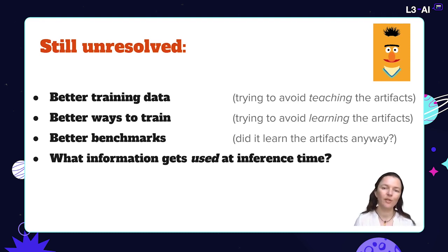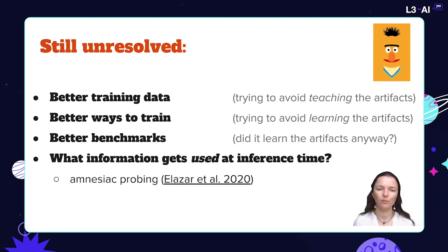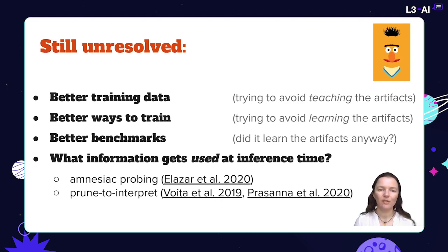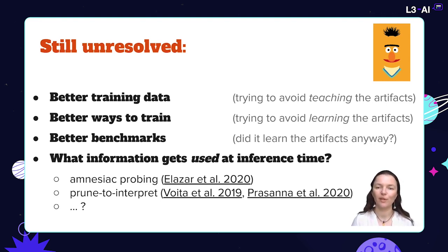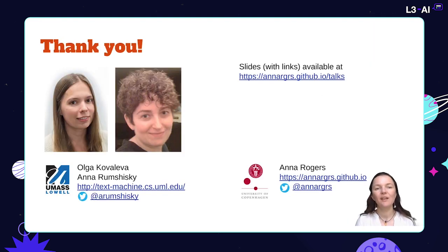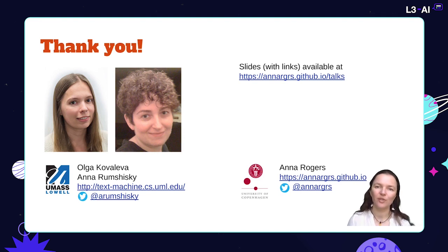Finally, all the probing studies so far have not told us what actually happens at inference time. Some directions include amnesiac probing — making the model forget something and seeing how it performs on a task — and pruning the model down to components that seem to perform a certain function. But neither of these is a silver bullet, and hopefully more convincing approaches will be found in the future. Thank you for your attention; a copy of these slides can be found on the linked page.